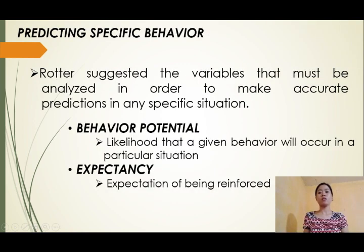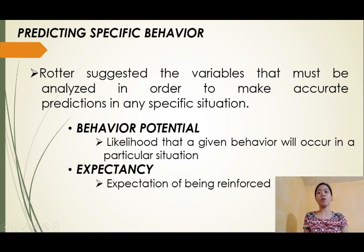Predicting Specific Behaviors. Rotter suggested four variables that must be analyzed in order to make accurate predictions in any specific situation. These variables are Behavior Potential, Expectancy, Reinforcement Value, and the Psychological Situation.